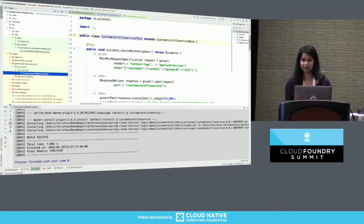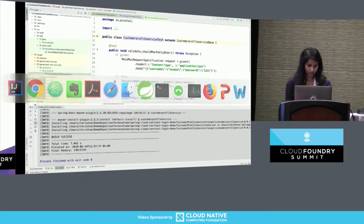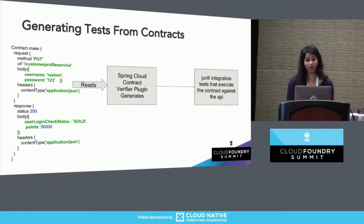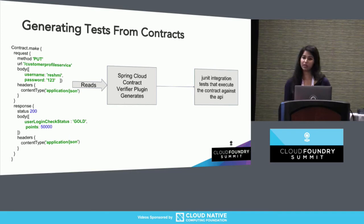This test makes sure that my initial implementation broke because the field I was using was incorrect. In summary, what you saw so far: I was on the producer side, and once I accepted the contract coming from the consumer — because I was using the verifier plugin — it was able to verify that my code validates against the API that the consumers are expecting, and it also generated these tests for me.